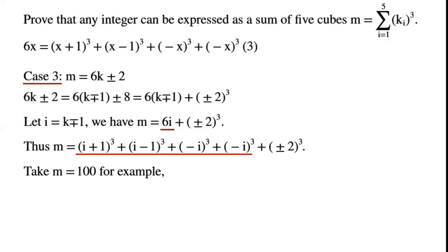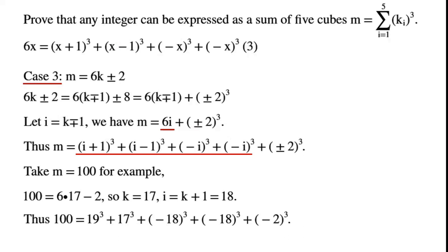Take m equals 100 as an example. 100 can be written as 6 times 17 minus 2, so k equals 17 and i equals k plus 1 equals 18. Thus, 100 can be written as 19 cubed plus 17 cubed plus (-18) cubed plus (-2) cubed. Hence, m can be written as the sum of 5 cubes.